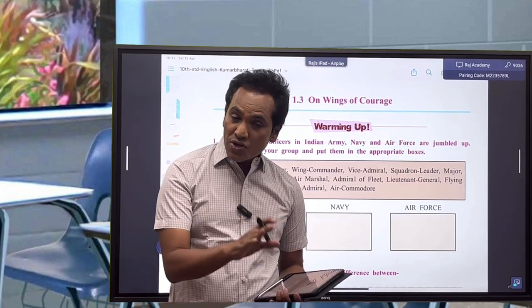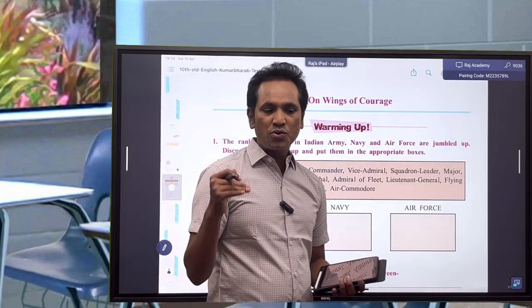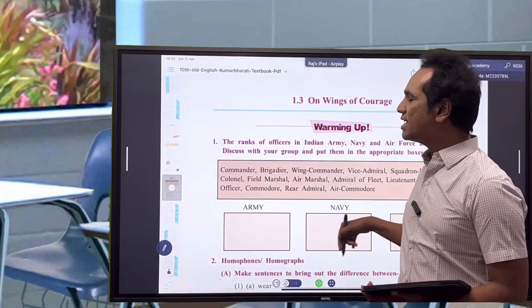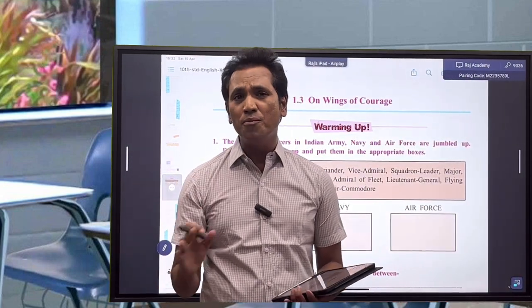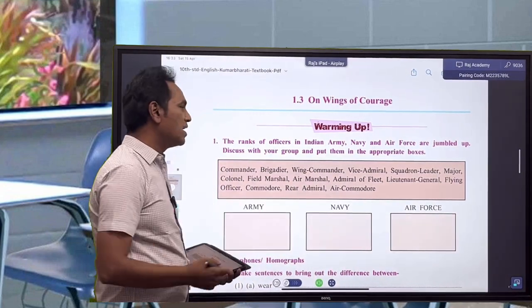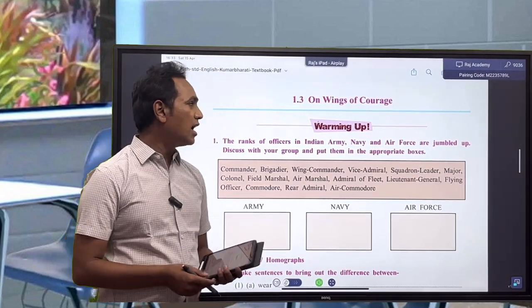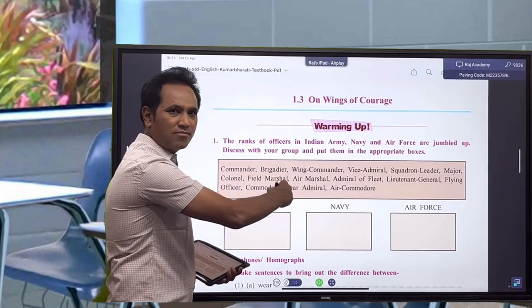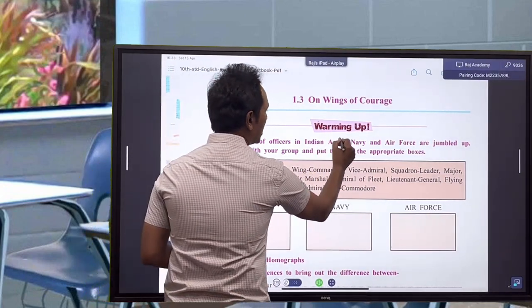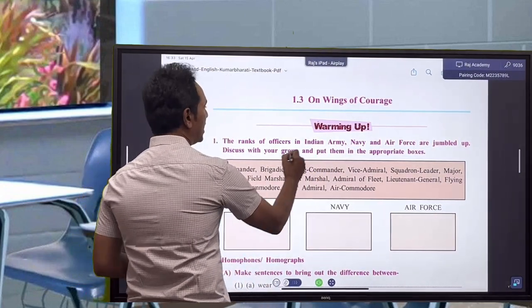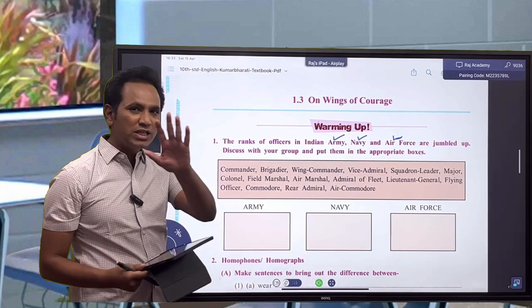Let us see what is there in the warming up session. It's very simple actually. Today's warming up session is the simplest kind. There are certain things given: the ranks of officers in Indian Army, Navy, and Air Force are jumbled up. They have been written in one box, so all the officers from the Indian Army, Navy, and Air Force have been jumbled up here.